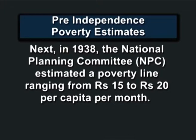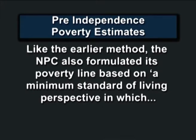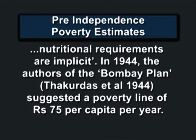Next, in 1938, the National Planning Commission (NPC) estimated a poverty line ranging from rupees 15 to rupees 20 per capita per month. Like the earlier method, NPC also formulated its poverty line based on a minimum standard of living perspective in which nutrition requirements are implicit.